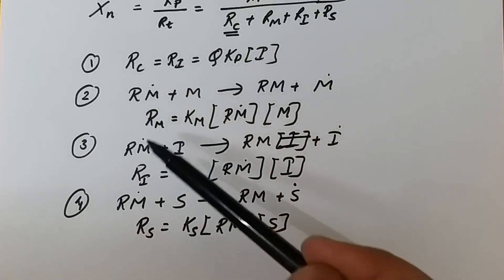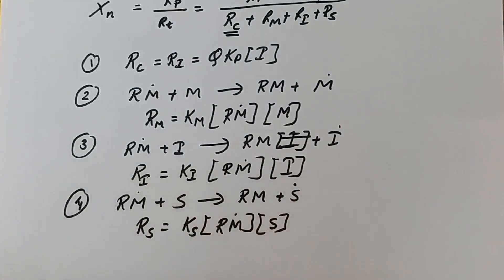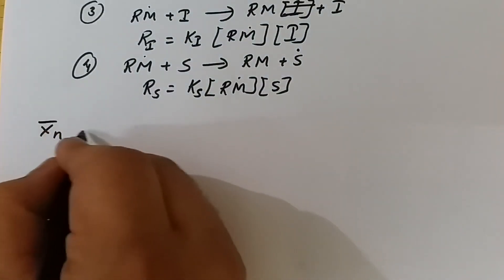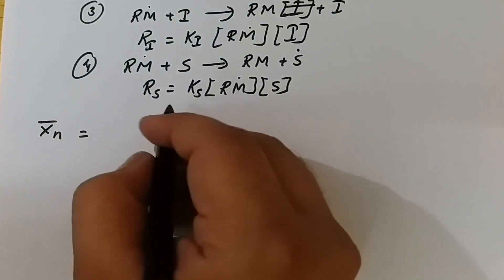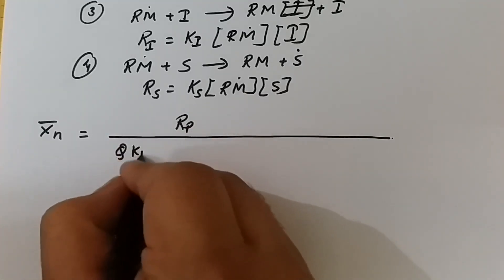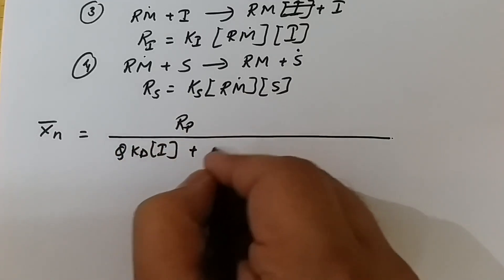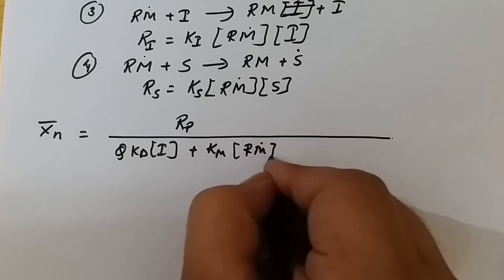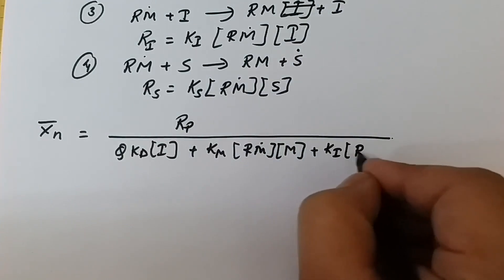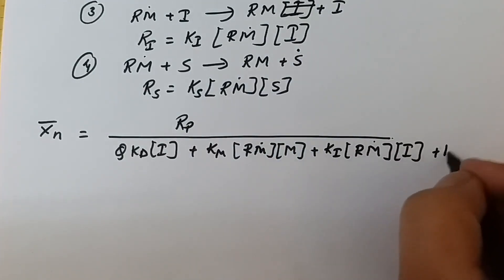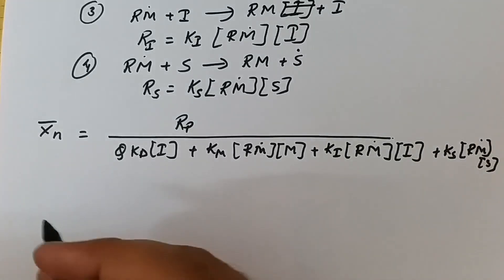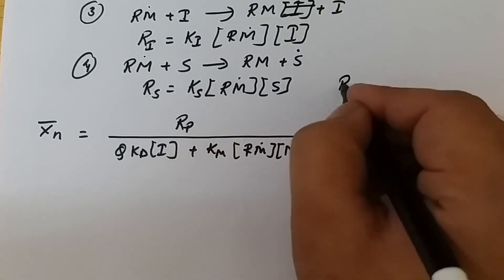Now we substitute all four rate expressions into the degree of polymerization relationship. When we substitute all four terms, we have: x̄n equals Rp divided by [φ·kd·[I] + km·[Rm•]·[M] + ki·[Rm•]·[I] + ks·[Rm•]·[S]]. This is our relationship.